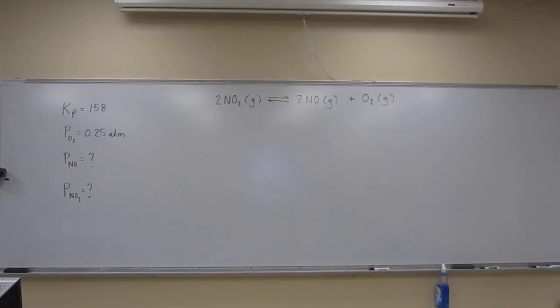So let's try this problem. It says at 1000 Kelvin a sample of pure nitrogen dioxide gas decomposes according to the following equation. It also gives us that the equilibrium constant Kp is 158 and analysis shows that the partial pressure of oxygen gas is 0.25 atm at equilibrium. Calculate the partial pressure of nitrogen monoxide and nitrogen dioxide in the mixture.